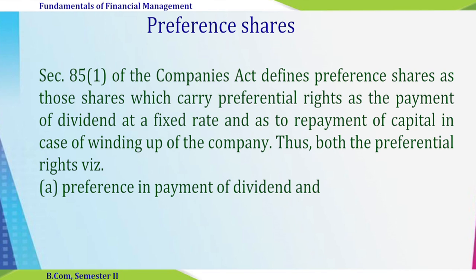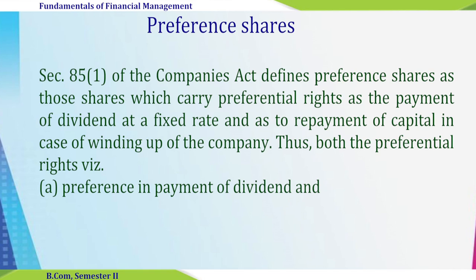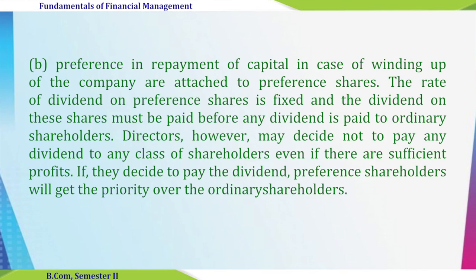The next source for long-term capital is preference shares. According to Section 85(1) of the Companies Act, preference shares are those which carry preferential rights as to payment of dividend at a fixed rate, and as to repayment of capital in case of winding up of the company. So there are two preferential rights: preference in payment of dividend over equity shareholders, and preference in repayment of capital in case of winding up. The rate of dividend on preference shares is fixed, and dividend must be paid before any dividend is paid to ordinary shareholders.